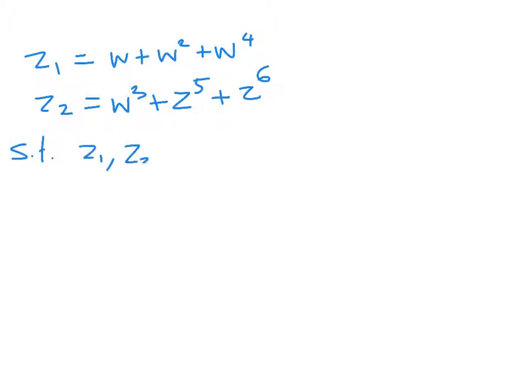So what have we got now? Well, we've got z₁ = w + w² + w⁴, and z₂ is w³ + w⁵ + w⁶. And we want to show that z₁ and z₂ are roots of this quadratic: z² + z + 2 = 0.